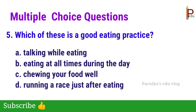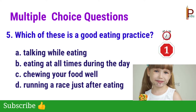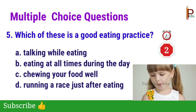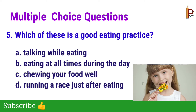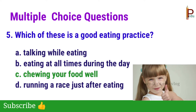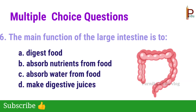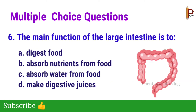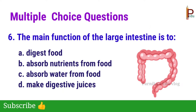Fifth one: which of these is a good eating practice? The answer is C — chewing your food well. Sixth one: the main function of the large intestine is to? The answer is C — absorb water from food.